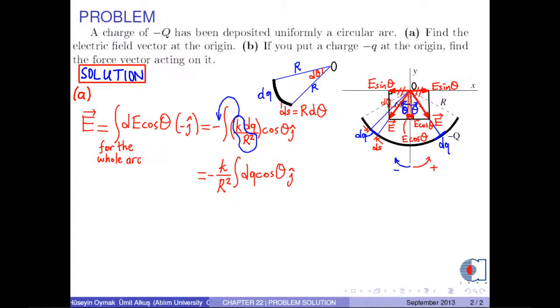In order to progress, let us find an expression for dq in terms of θ. The line charge density of the circular arc denoted by λ is calculated by the formula dq over dl. Here, dl is ds. From this, dq is obtained as λ times ds.